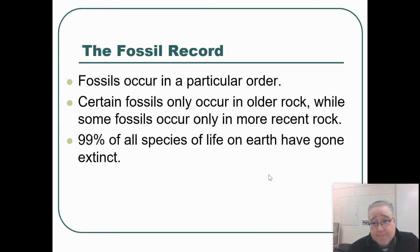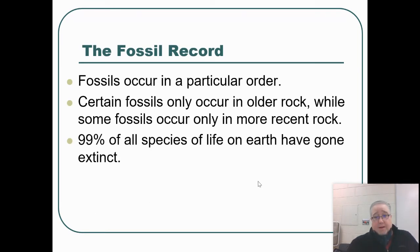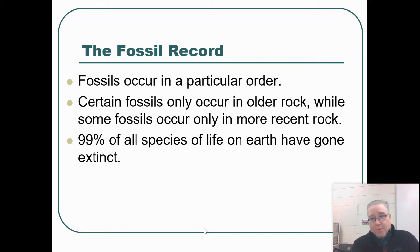The fossil record — all of the fossils we've ever found — occurs in a particular order. Some fossils are older than others and some are younger. Some fossils occur in more recent rock, which tells us they're younger, and some occur in older rock, which tells us they're older. One thing we have really learned from the fossil record is...